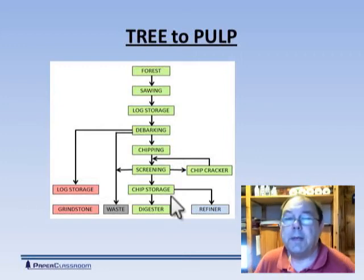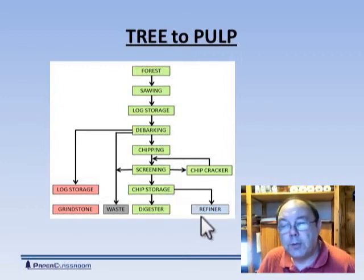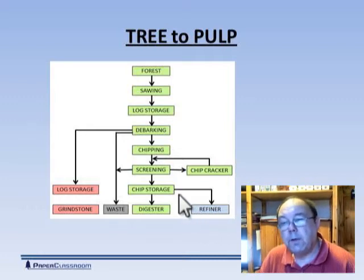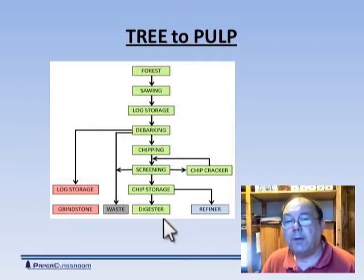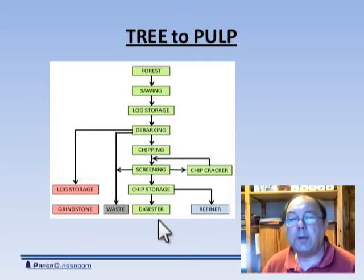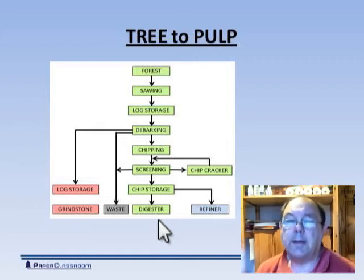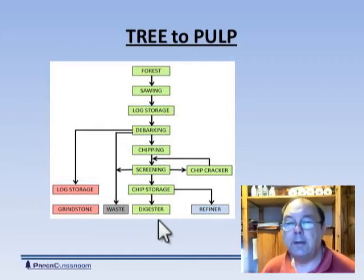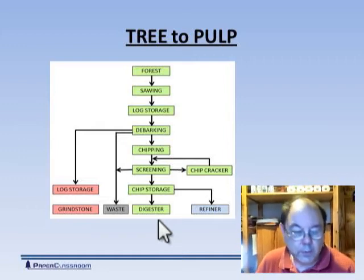If we stick with mechanical methods we can put it through a refiner, or if we choose a chemical method we can stew it with chemicals — high temperatures and pressures — in a device we call a digester.